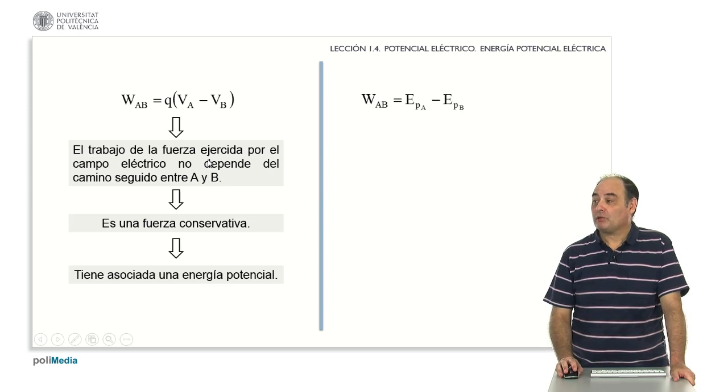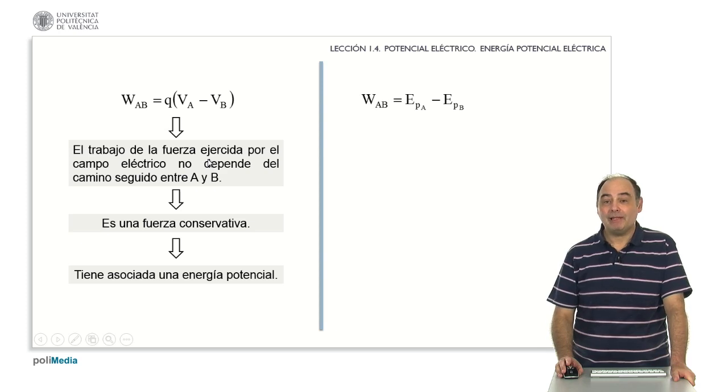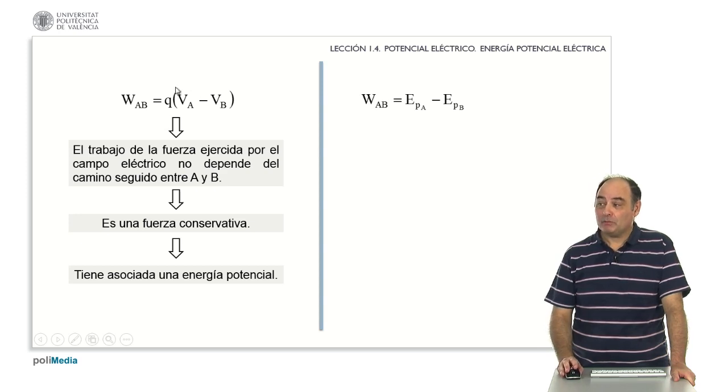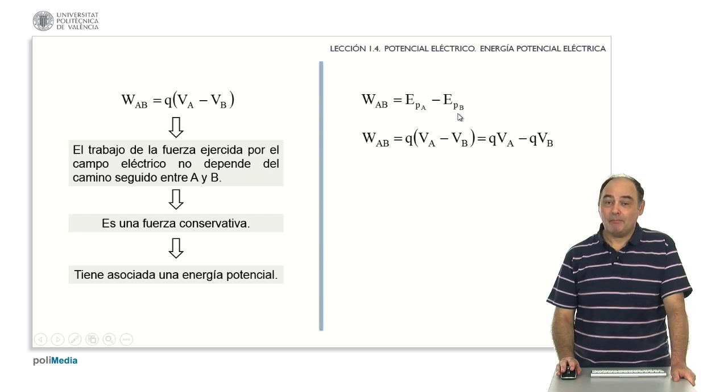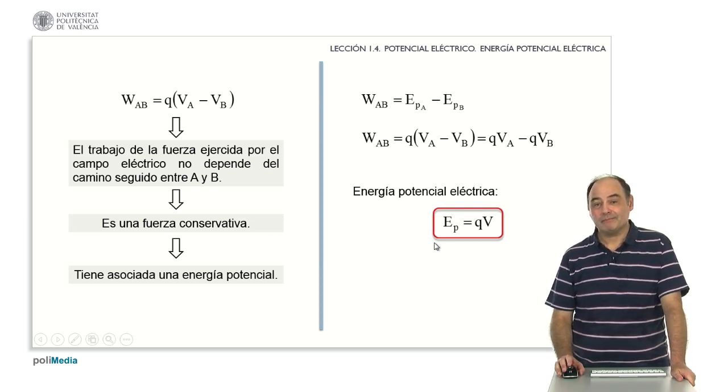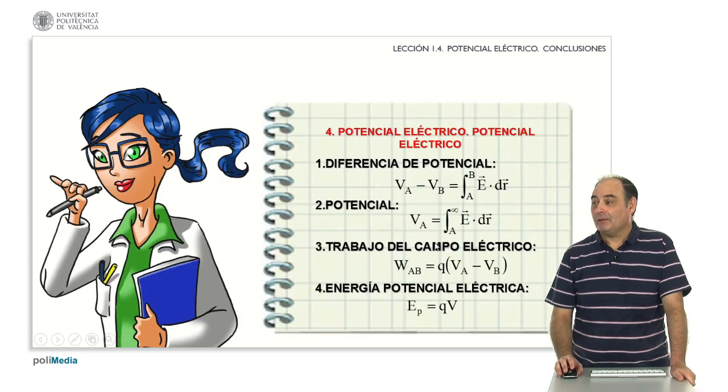Moreover, from mechanics, we also know that, in the case of a force being conservative, the work between two points is the potential energy of the starting point minus the potential energy of the destination point. Developing the expression we have derived above and decomposing it into two terms, we have only to compare the upper equation with the lower one, and it is quite clear what is the general expression of the potential energy. This potential energy is the product of the charge we are moving times the potential at each point.